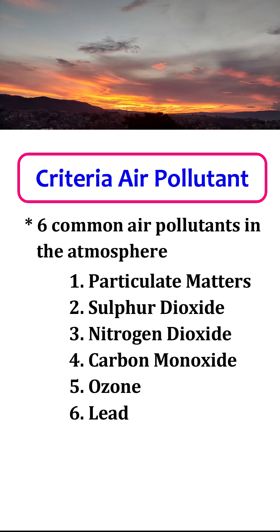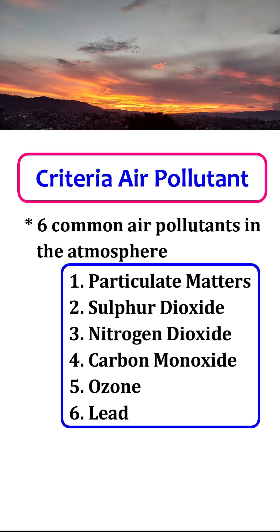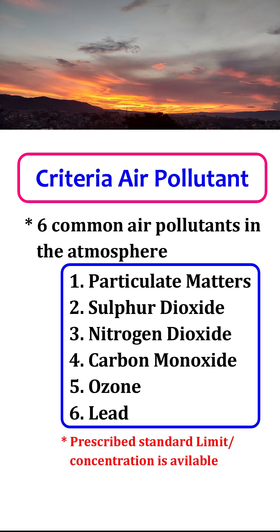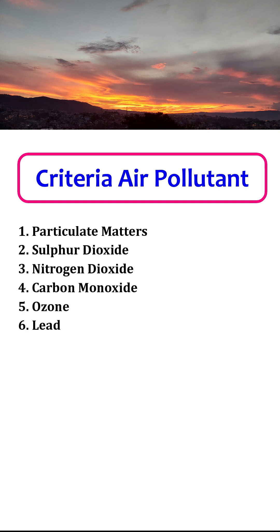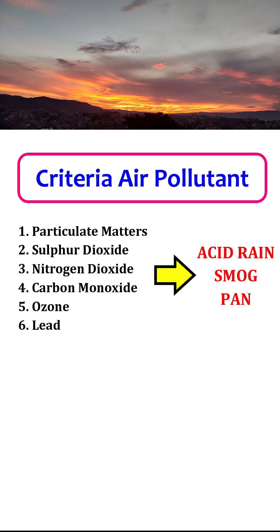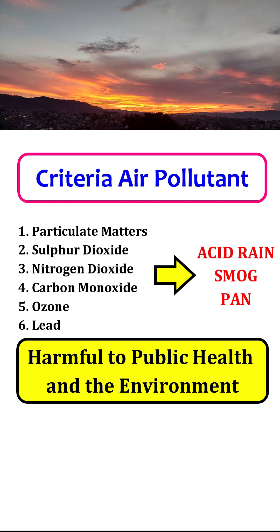Each of the six criteria air pollutants has a standard prescribed limit or prescribed concentration level in the atmosphere, assigned by the National Ambient Air Quality Standard. These six air pollutants are known to induce acid rain, smoke, and peroxyl acetyl nitrate, which are inevitably harmful to public health and the environment.